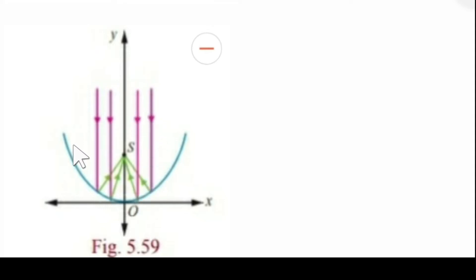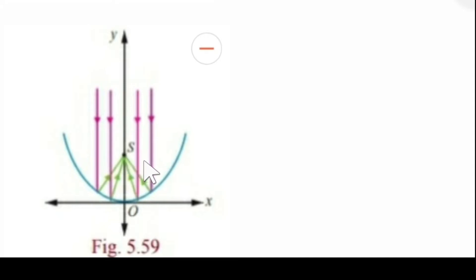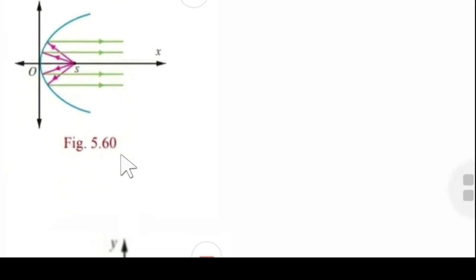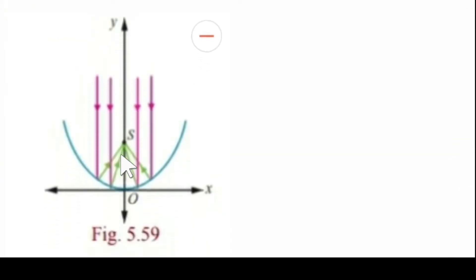Here the axis of the parabola is the y-axis. The rays arriving parallel to the y-axis are directed towards the focus. So the converse part is also true: the focus originates rays parallel to the parabola's axis on reflection, and conversely, rays parallel to the axis are directed towards the focus.